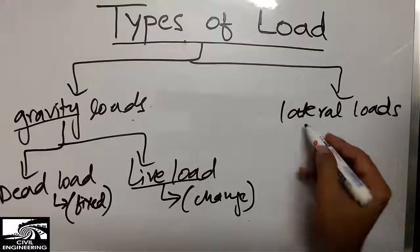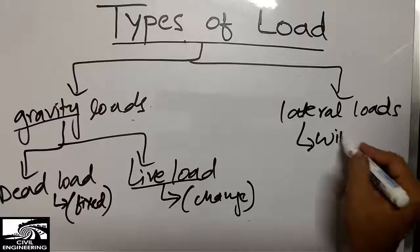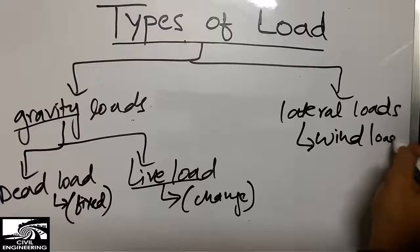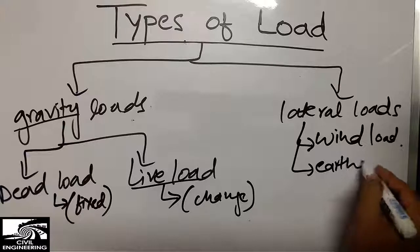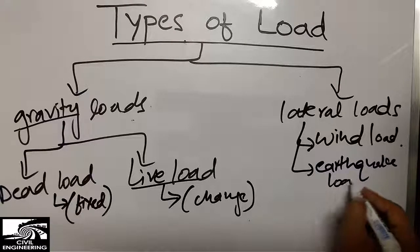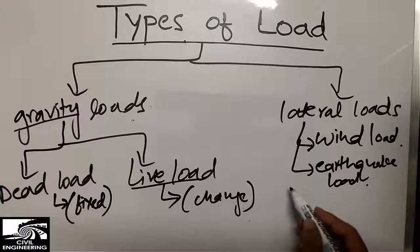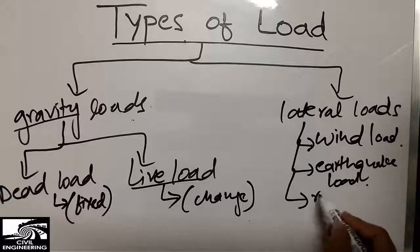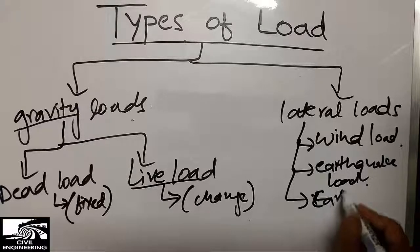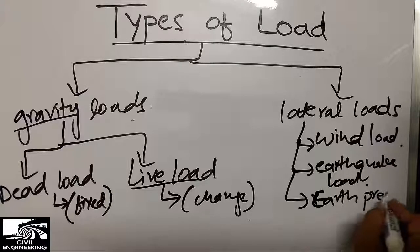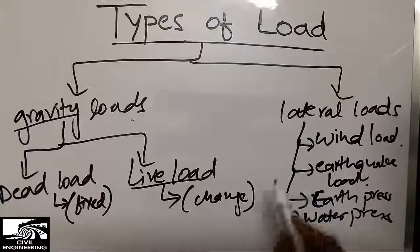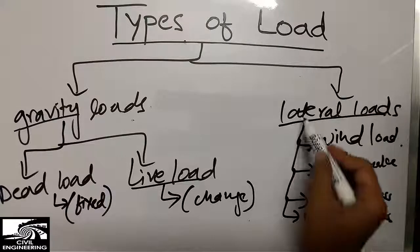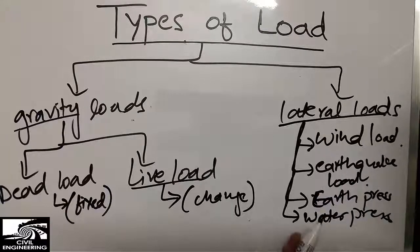Lateral loads include wind loads and earthquake loads, which act in the horizontal direction. They also include other loads like earth pressure from retaining walls and water pressure acting on the structure. These are all included in lateral loads because they act in the horizontal direction, while gravity loads act in the vertical direction.